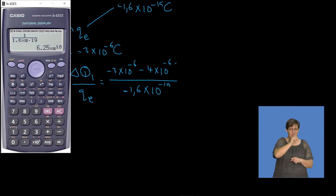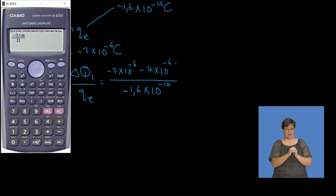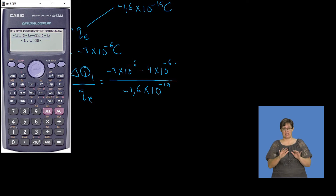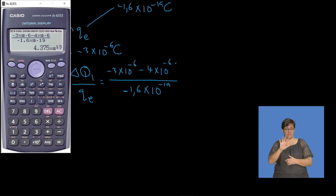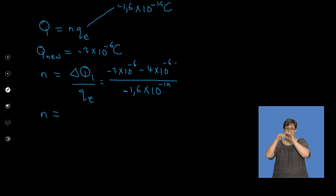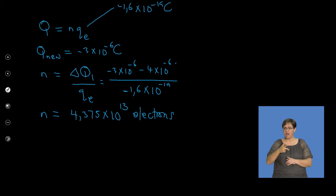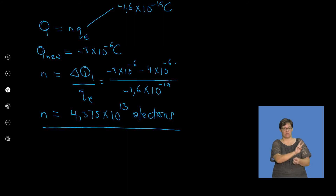The number of electrons transferred — from the calculator: negative 3 times 10 to the exponent negative 6, minus 4 times 10 to the exponent negative 6, divided by negative 1.6 times 10 to the exponent negative 19. This gives us 4.375 times 10 to the exponent 13 electrons. This is the number lost by Q2, gained by Q1 — the number of electrons transferred.